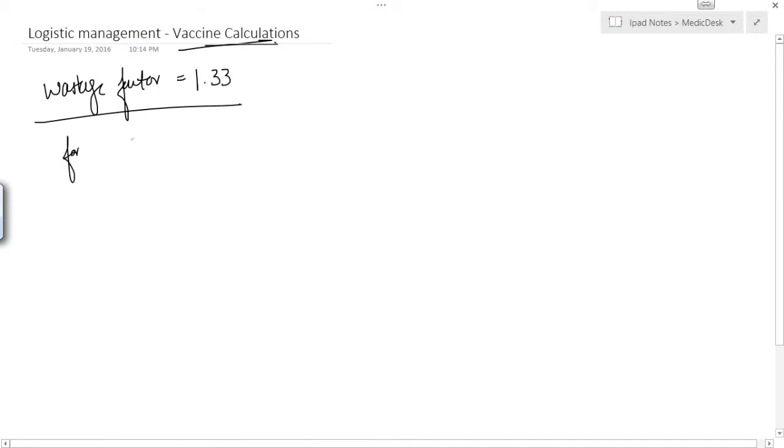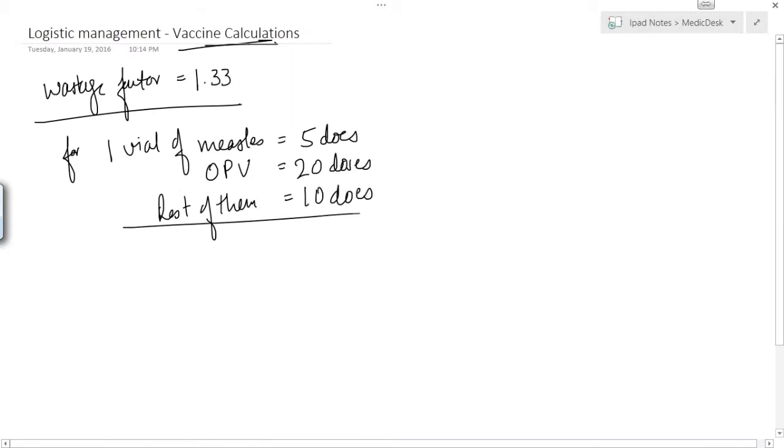The wastage factor for all the vaccines is 1.33 and the number of doses that we need to remember per vial. For one vial of measles it would be 5 doses, for one vial of oral polio vaccine it would be 20 doses, and for rest of them it would be 10 doses.